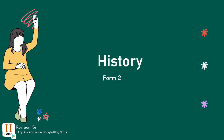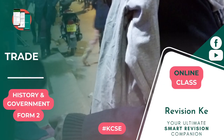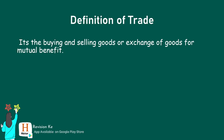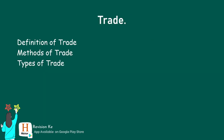In History, this is the first topic in Form Two, which is Trade. In this topic we need to define the term trade — trade is the buying and selling of goods, or exchange of goods for mutual benefit. Having defined that, we should be able to explain the methods of trade, identify types of trade, and finally discuss the origin.